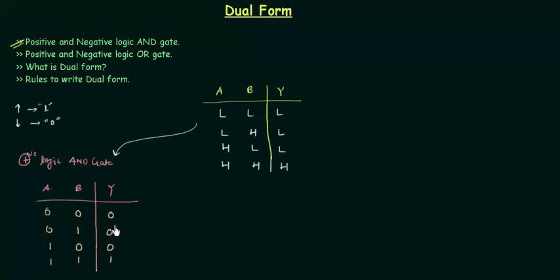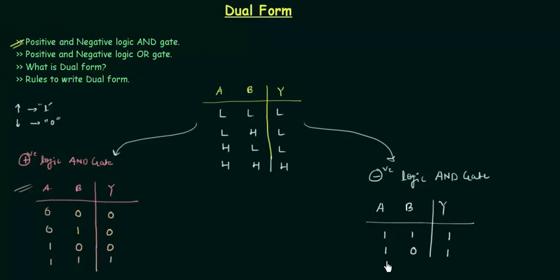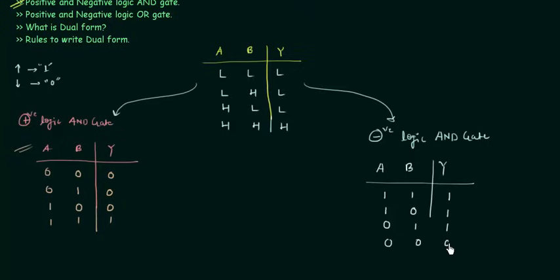This is the AND gate in positive logic and we will use this table throughout the course. Now we find the negative logic AND gate. We have two inputs A and B, Y is the output. In negative logic, the lower value is represented by one and the higher value by zero. So the truth table becomes: 1,1 → 1; 1,0 → 1; 0,1 → 1; 0,0 → 0. This is the truth table for the negative logic AND gate.